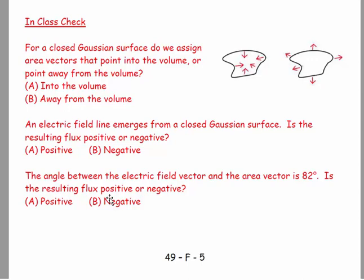In class check. For a closed Gaussian surface do we assign area vectors that point into the volume or point away from the volume? Is it like this pointing into the volume, or is it like this for the area vectors pointing away from the volume? And it's always away from the volume.